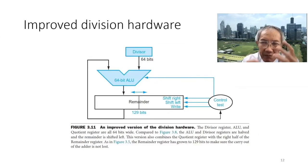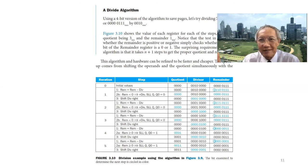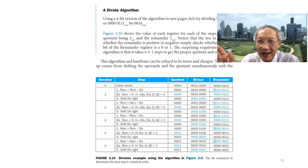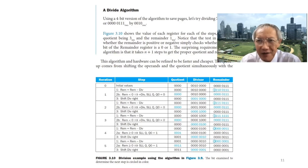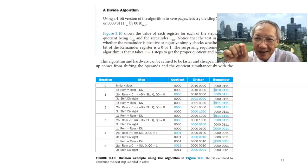Similarly, we can improve the division hardware in exactly the same way as the multiplication improvement. This is just to give you a rough idea. If you can work out the detail, great. If not, as long as you can write code to do division and get the correct result, that's okay. I will ask you to be able to do step-by-step multiplication.